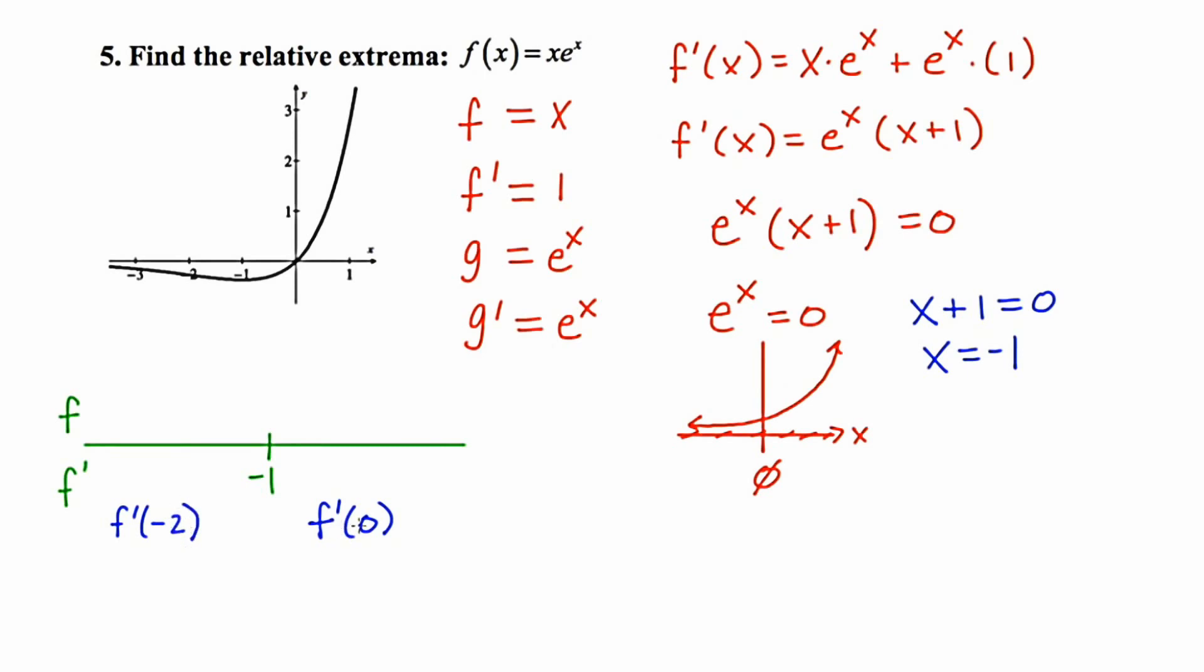Let's do the 0 first. Remember, I'm plugging this into the derivative, which is up here. So e to the 0 is 1. 0 plus 1 is 1. 1 times 1 is 1.